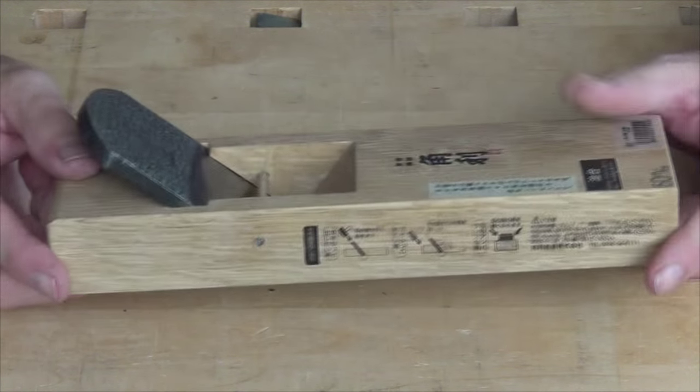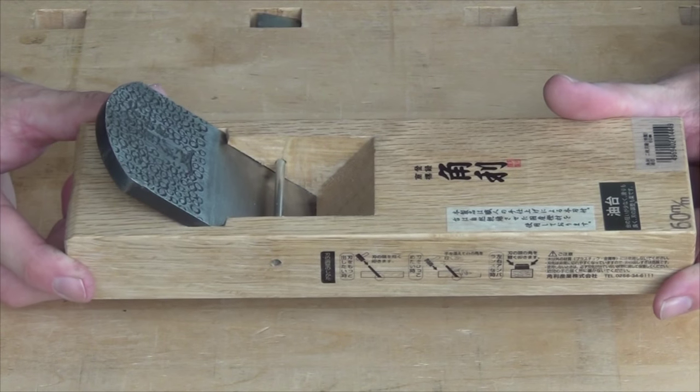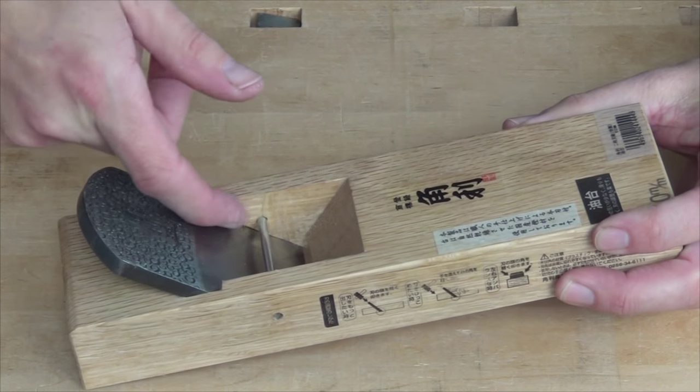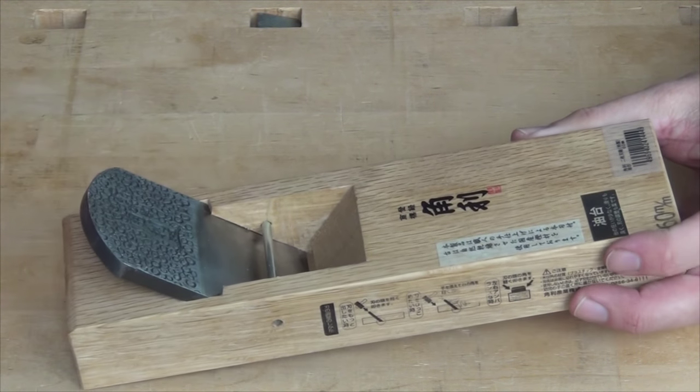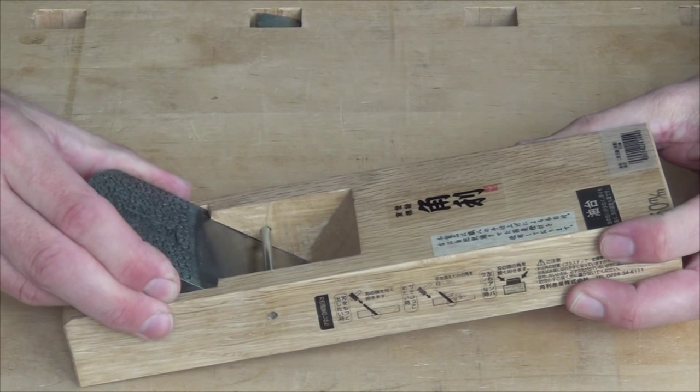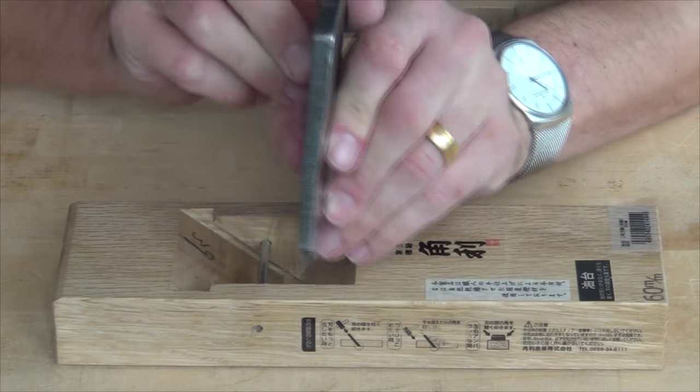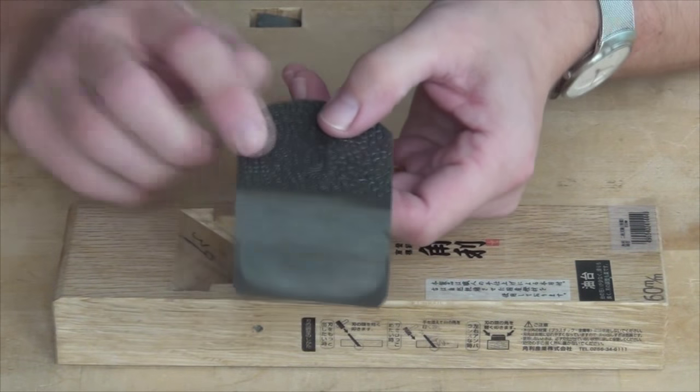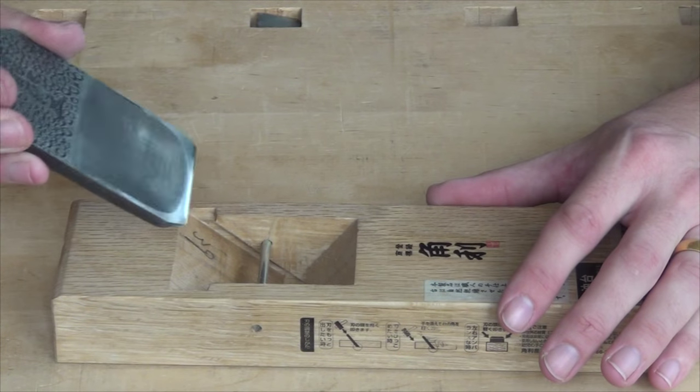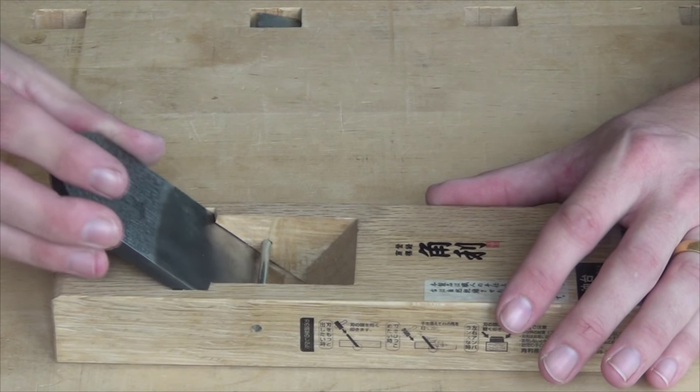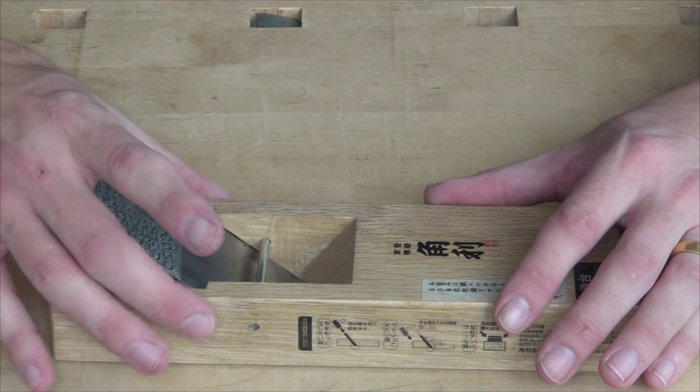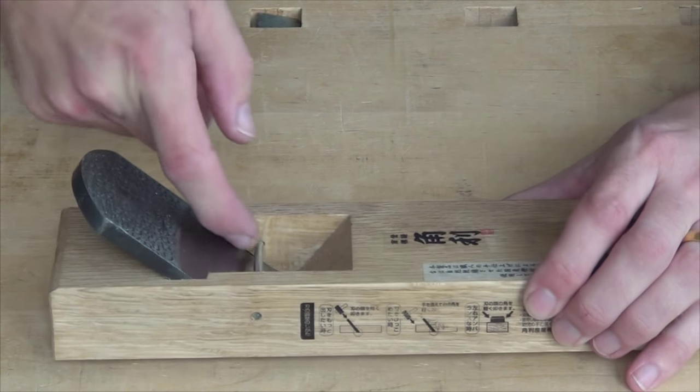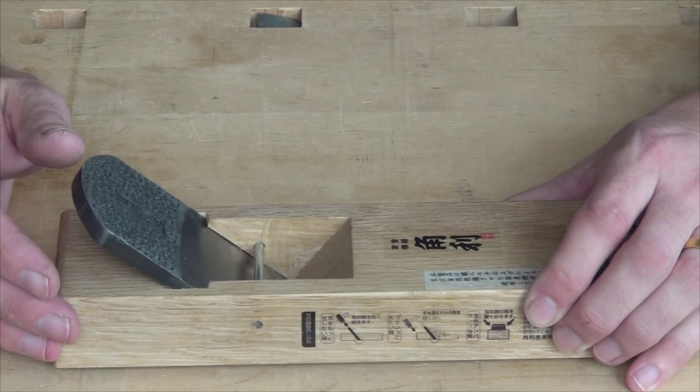So that tells me that either the bed is too high or the cheeks in here need relieving a little bit. The blade is held in by its wedge shape. It's wedged along its length and also wedged in its width as well. So as we drop the blade in, it tightens up both against the sides and also between the bed and the abutment in the body of the plane.